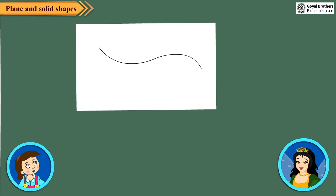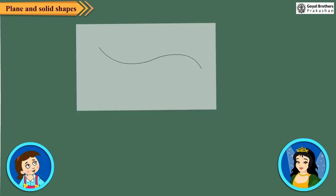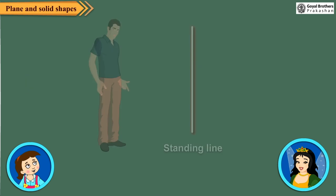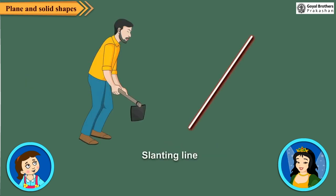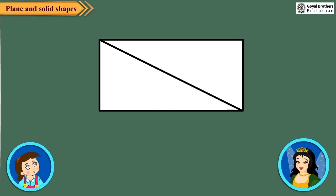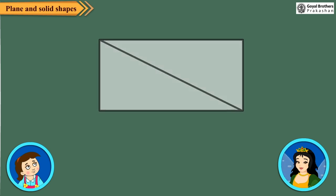Do you know Neha, we have three kinds of straight lines? Sleeping line, standing line and slanting line. Oh, it means this figure has two sleeping lines, two standing lines and one slanting line. Absolutely correct. Using these lines, we can draw various shapes. Now look at this shape. It is made up of three straight lines, two of which are slanting lines and the third is a sleeping line.